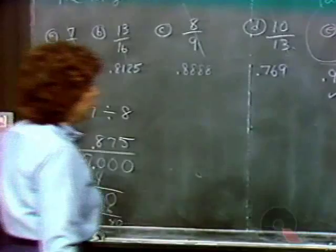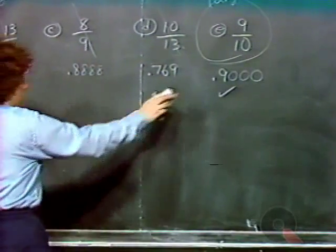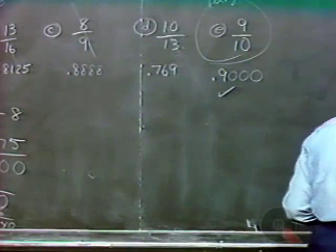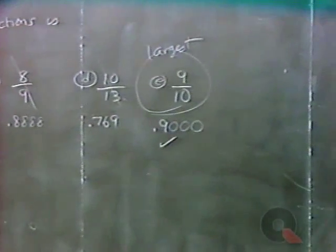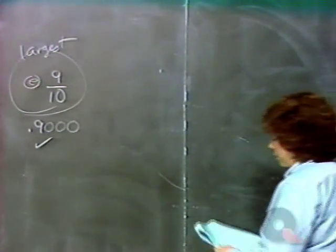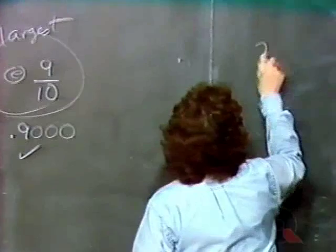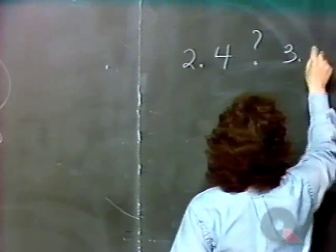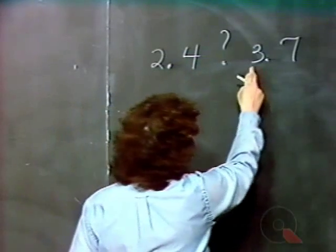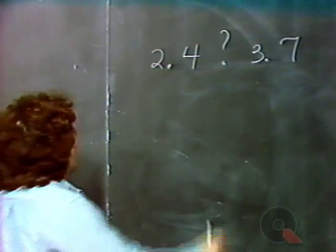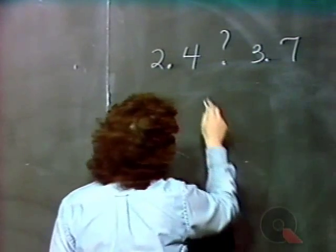For comparisons, you might need to add zeros to the right of a terminating decimal. If we are dealing with a mixed decimal number — a number that has digits both to the left and to the right of the decimal point — first compare the numbers to the left of the decimal point. For example, 2.4 and 3.7: since 2 is less than 3, we know immediately that 2.4 is less than 3.7.